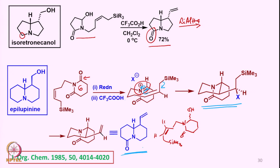And therefore, that particular product again has this lactam part, and this lactam can be reduced to form the corresponding epilupinene. You have this intermediate which undergoes cyclization and reduction from the lower part, and therefore the hydrogen comes on top. The stereochemistry can be easily understood — we have the product with the desired stereochemistry.